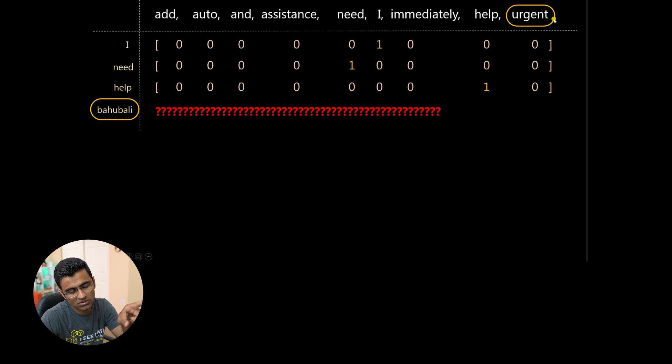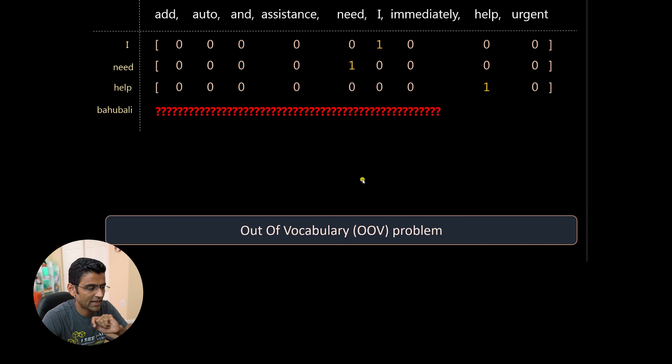But then every new word that you are encountering will have same numeric representation. So you see that this is not accurate and it suffers from out of vocabulary problem.